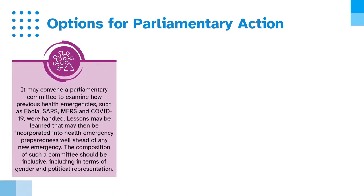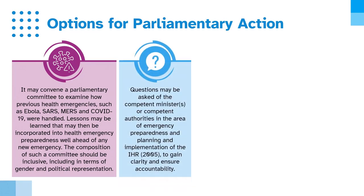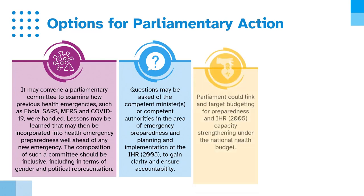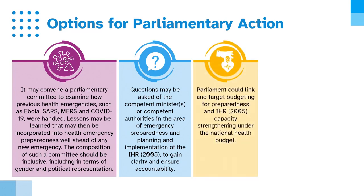Options for parliamentary action include convening a parliamentary committee to examine how previous health emergencies such as Ebola, SARS, MERS, and COVID-19 were handled, so that lessons learned may be incorporated into health emergency preparedness well ahead of any new emergency. The composition of such a committee should be inclusive in terms of gender and political representation. Questions may be asked of the competent minister or authorities in the area of emergency preparedness, planning, and IHR implementation to gain clarity and ensure accountability. Parliament could also link and target budgeting for preparedness and IHR capacity strengthening under the national health budget.